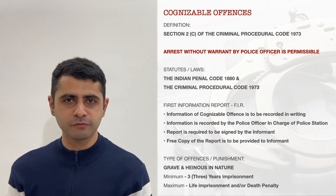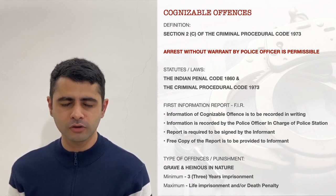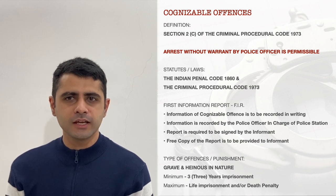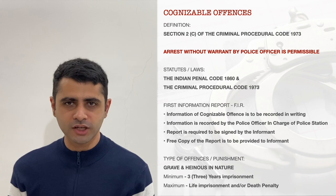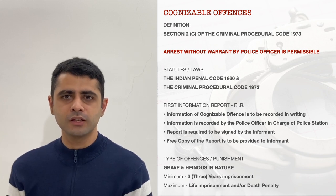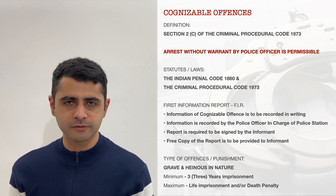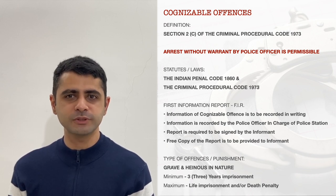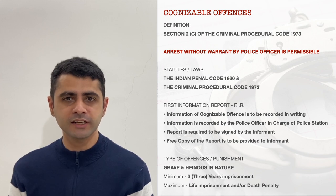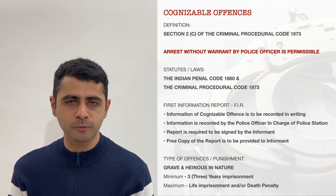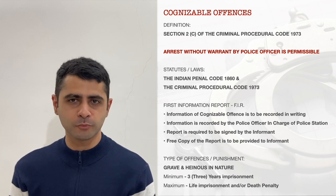As per Section 154 of the CrPC, the information of a cognizable offense is to be promptly recorded in writing by the officer in charge of a police station. This is generally referred to as a First Information Report, or an FIR. This report is to be signed by the informant, and a copy is to be retained and provided to the informant free of cost, so as to avoid tampering with the report.